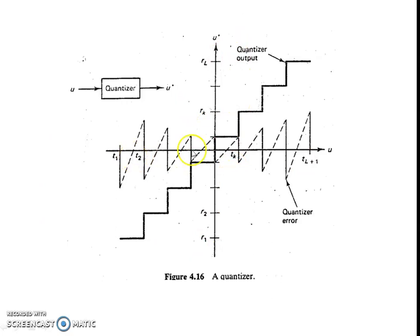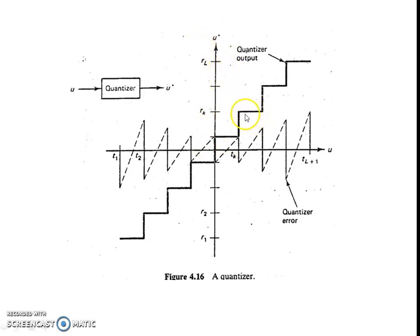This is a typical transfer function of a quantizer — it looks like a staircase. U-tilde takes only the values r1, r2, r3, and so on up to rl. The value rk is assigned when u is in the interval [Tk, Tk+1]. If u is greater than T1 it is assigned to r2; if u is less than T1 it is assigned to r1. The staircase also illustrates the quantization error.